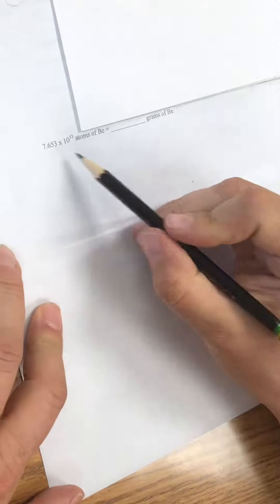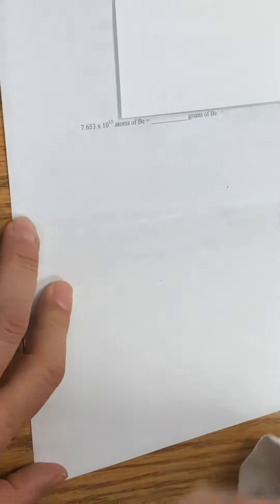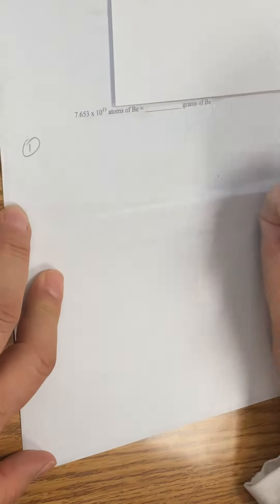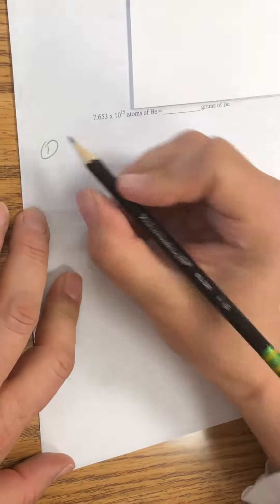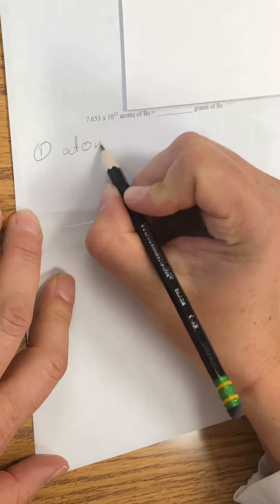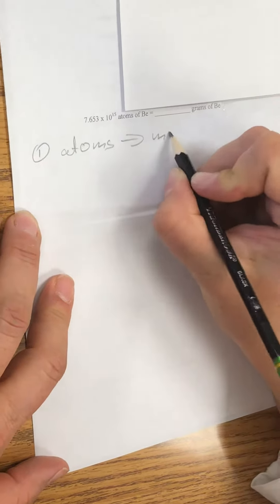Okay, so now we are focusing on our second two-step conversion problem. The first thing is realizing that I need to go from atoms to grams, so I will go from atoms to moles—mole is always in the middle.